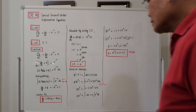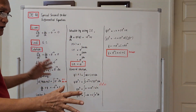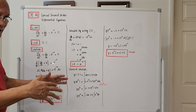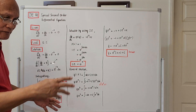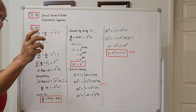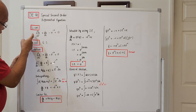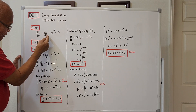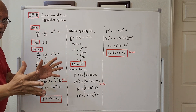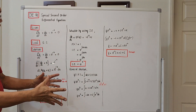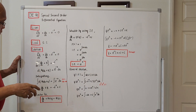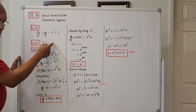Special means it does not fall under the three cases — the approach to the problem will be different from the three cases. The given problem is: d²y/dx² plus dy/dx minus e to the negative x equals zero. The requirement of the problem is to find the general solution.